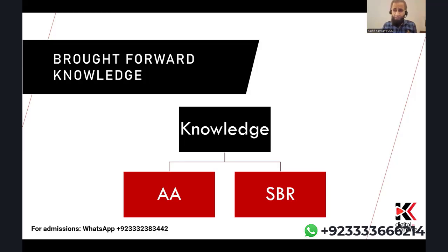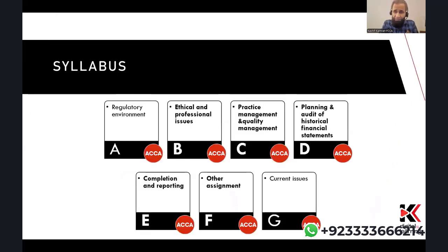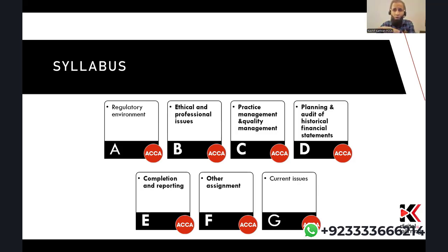Moving towards the syllabus, there are seven syllabus areas for AAA, from A to G. Syllabus area A is regulatory environment, B is ethical and professional issues, C is practice management and quality management, D is planning and the audit of the historical financial statement, E is completion and reporting, F is other assignments, and G is current issues. I will guide you about how they are tested and which are most important. My online course covers the whole syllabus from A to G — nothing will be omitted or skipped.